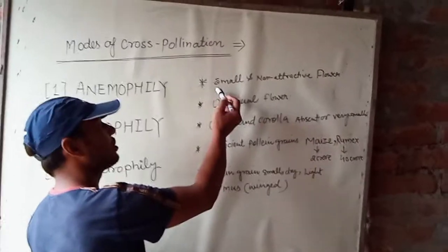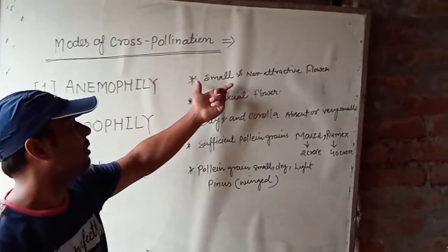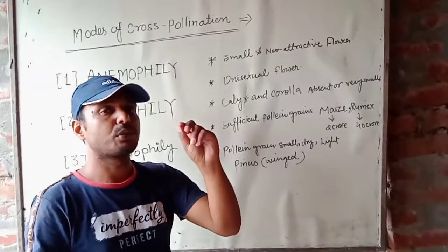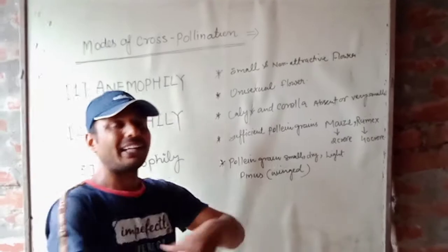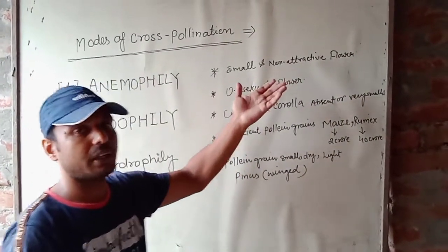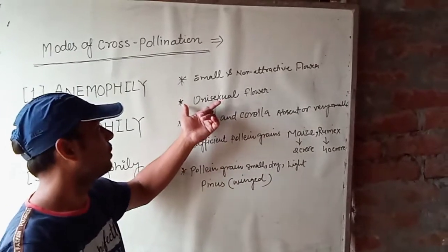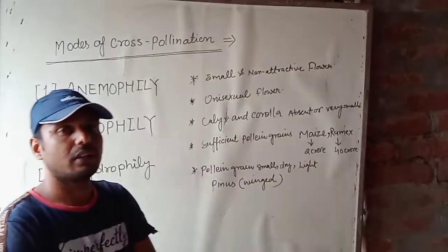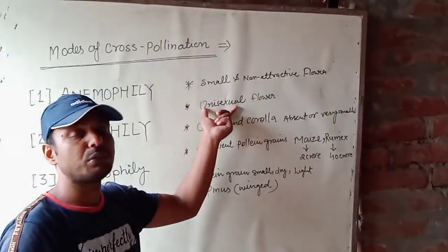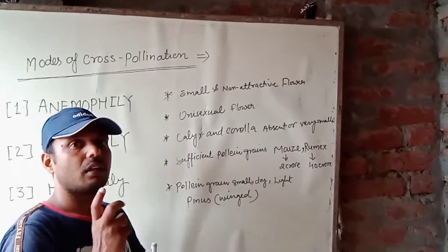These are the characteristics of anemophilous flowers. First, these flowers are small and non-attractive. Second, these are unisexual flowers. Unisexual flowers have a single reproductive organ present.